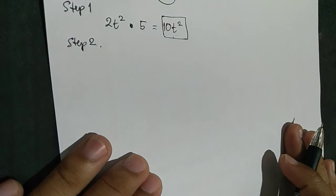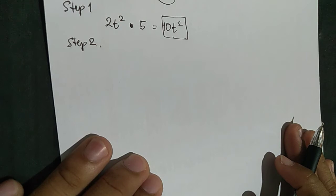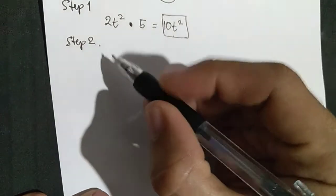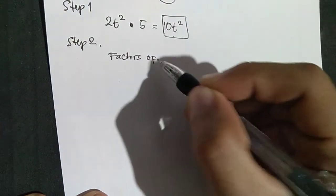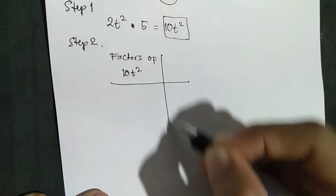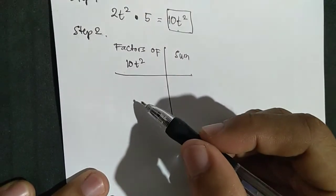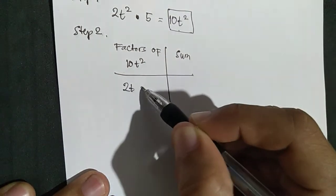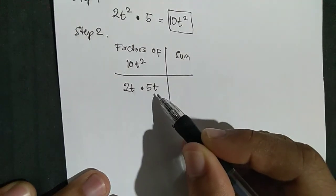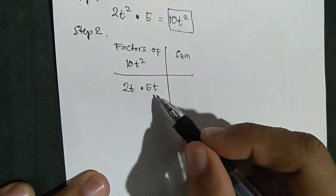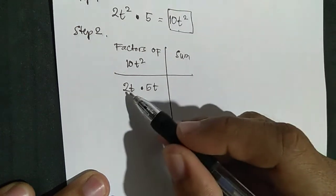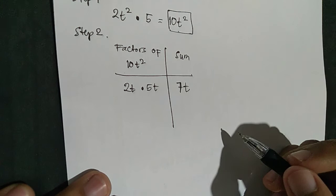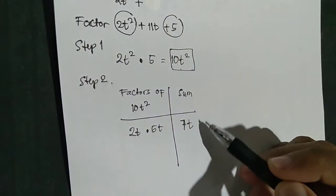Step 2: find the factors of the product of the first and last term whose sum is equal to the middle term. Make a table of factors of 10T squared. First try: 2T times 5T equals 10T squared. Adding them gives 2 plus 5 equals 7, so 7T — not equal to 11T. Next, try negative 2T times negative 5T, which gives positive 10T squared, but the sum is negative 7T — still not 11T.